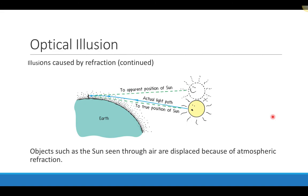Another optical illusion involves light refracting in the atmosphere. The sun can actually be below the horizon and still appear visible in the sky because of this bending. The light hits the atmosphere and bends, so when the person follows the rays back, the sun appears higher in the sky than its true position.